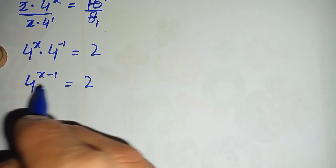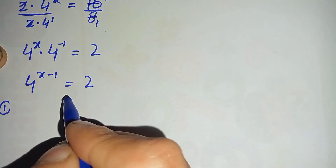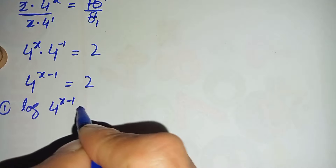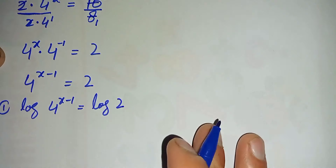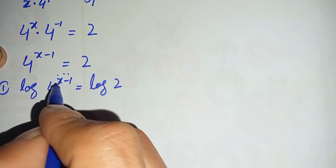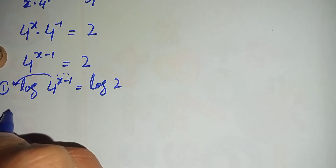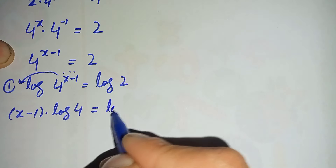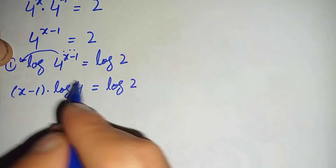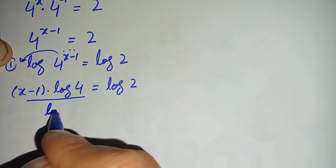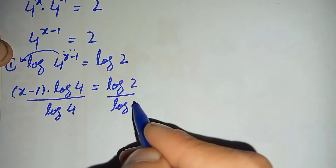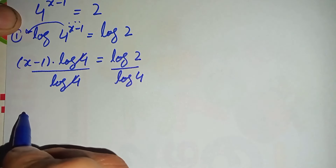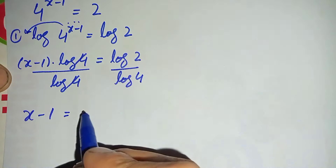From here I will use two different methods to find the value of x. In the first method we take log on both sides. Using the log power property, we shift the power x minus 1 to the front: x minus 1 times log of 4 is equal to log of 2.